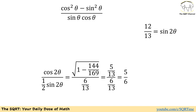We have sine of 2 theta and cosine of 2 theta can be represented as the square root of 1 minus sine squared of 2 theta. We replace what we have for sine of 2 theta, which is 12 over 13. If you simplify everything, the final answer is going to be 5 over 6 divided by 13 over 6, which gives us 5 over 6. And that's our final answer.